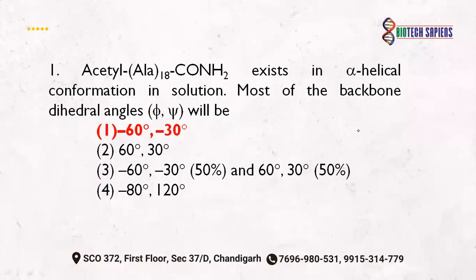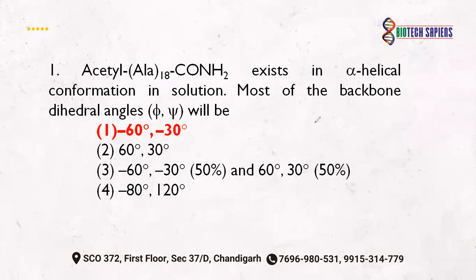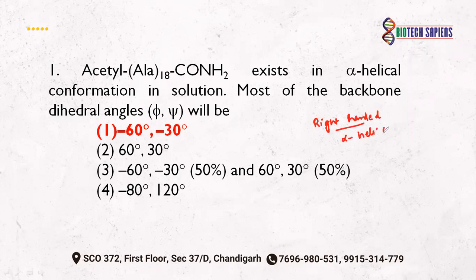This is the first question: tyrosine in an alpha helical conformation — so most of the backbone dihedral angles will be? Generally in our helix, which is your right-handed alpha helix, you need to answer according to the right-handed alpha helix because it is not mentioned in the question whether it is right-handed or left-handed. If not specified, you assume right-handed alpha helix.